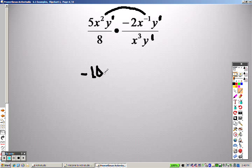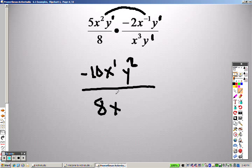2 plus negative 1 is x to the first power. y to the first and y to the first is y squared. So that's what's on top over 8, because there is no other number down there, x cubed and y to the first.